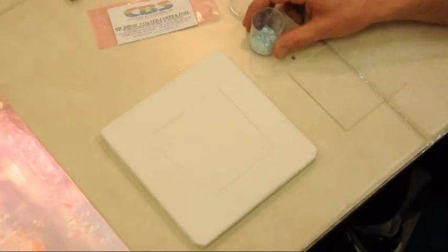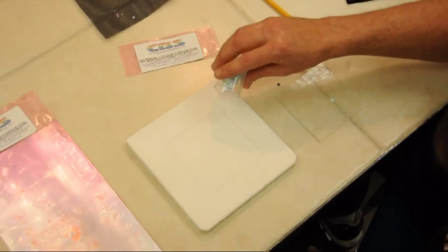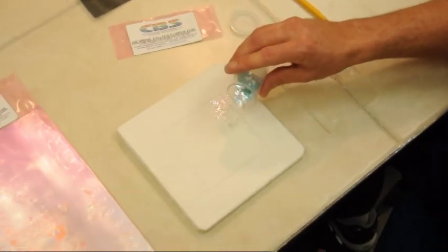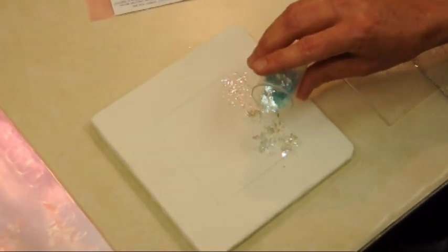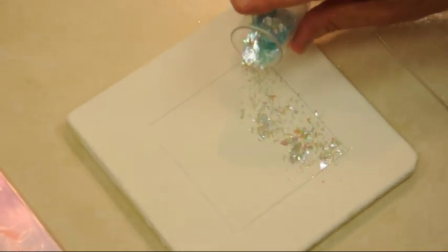So we're going to start out by drawing right on the kiln shelf with a pencil the shape of the piece of glass. That's so that we can, when we sprinkle our dichroic on there, we can contain where we want the dichroic to go and not have that much go over the edges.